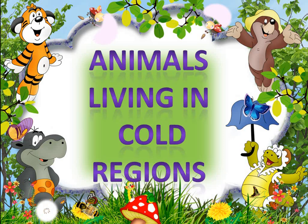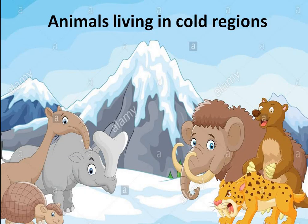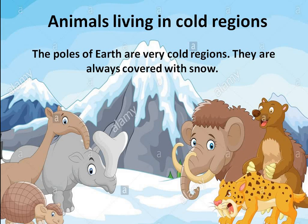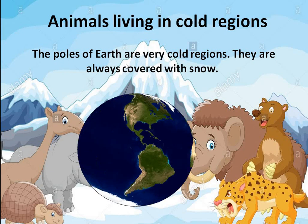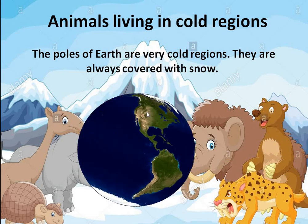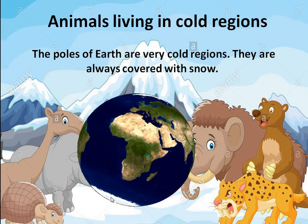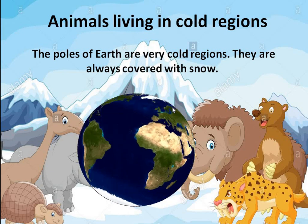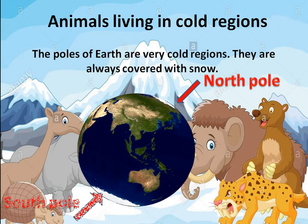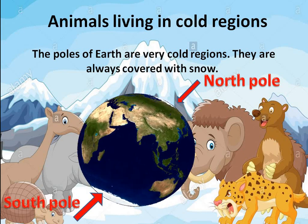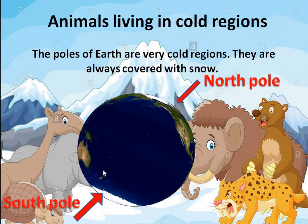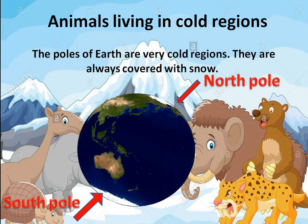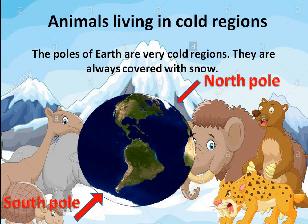Now we will be doing animals living in cold regions — the fourth category of land animals. The poles of the earth are very cold regions, always covered in snow. The top part of the earth is the North Pole and the bottom part is the South Pole. These poles are also called the Arctic regions, and some animals live in these very, very cold regions.